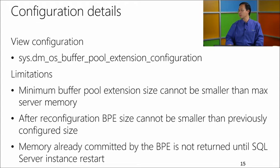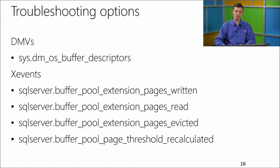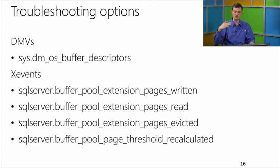How do I monitor what's going on with buffer pool extension? There are existing DMVs we have updated, specifically the DMV called sys.dm_os_buffer_descriptors, which allows you to see what's going on with your memory at the descriptor level. With individual descriptors, you can see if a descriptor is in the extension, stored in main memory, or being evicted. We also added extended events (XEvents) so you can watch how pages move between all parts of the buffer pool manager — they tell you when we write pages to the extension, read pages from the extension, and when we recalculate the eviction threshold.